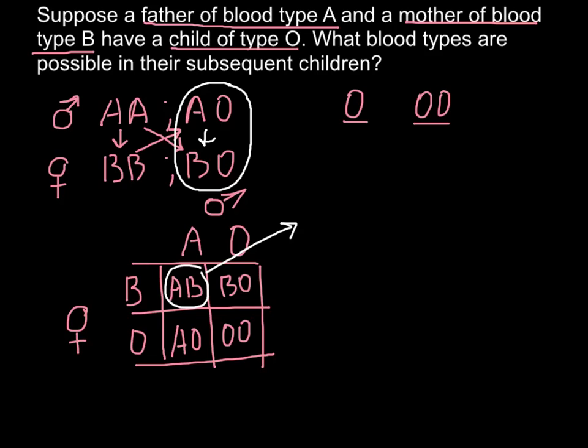And as you see, the subsequent children have one-fourth chances to have blood type AB. They also would have one-fourth chances to have blood type B, because genotype BO would produce blood type B.